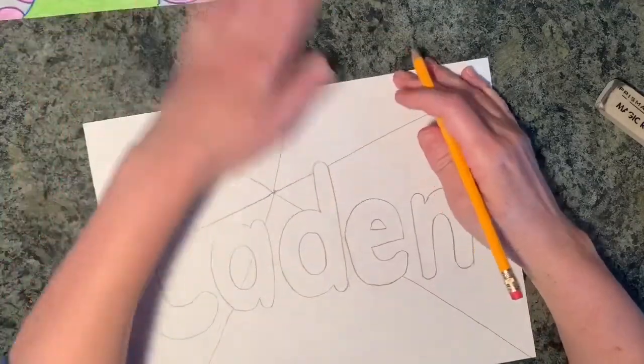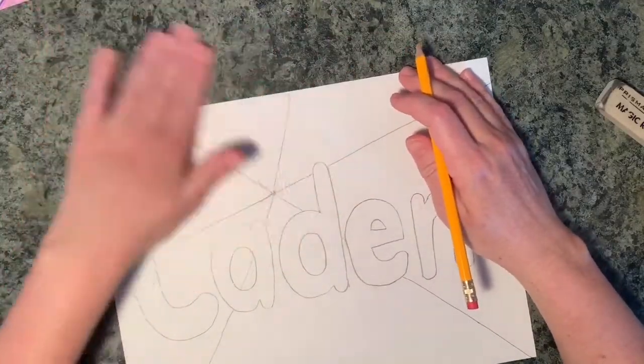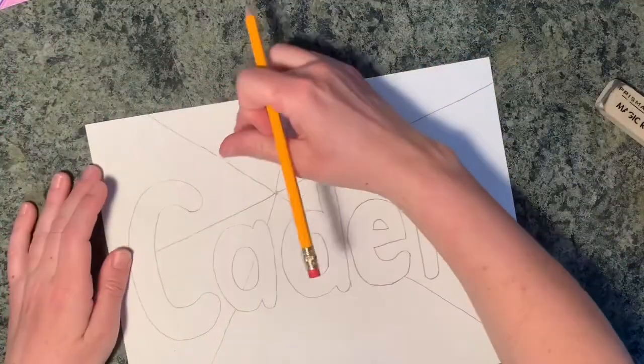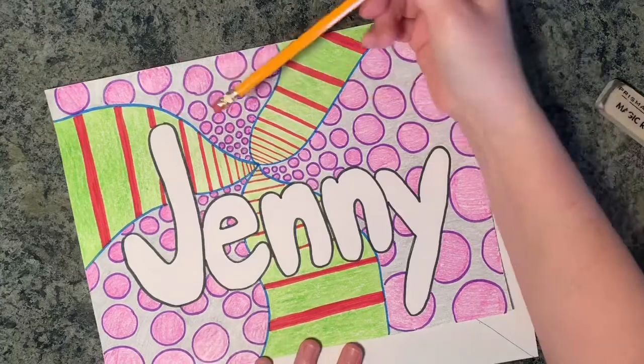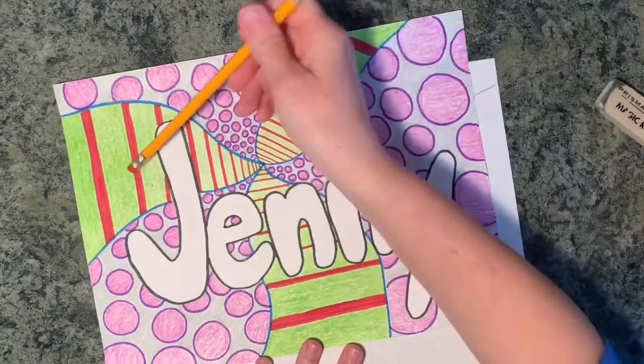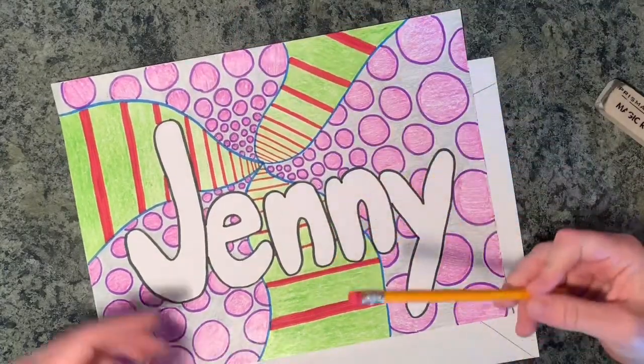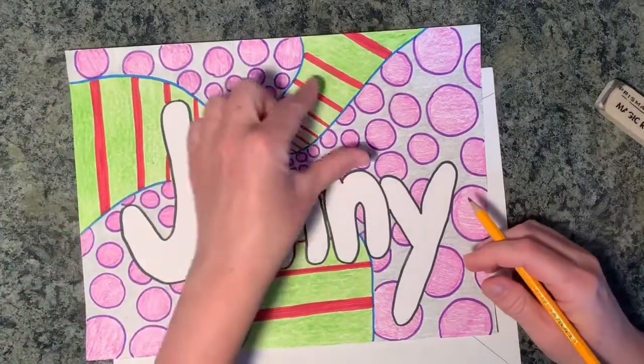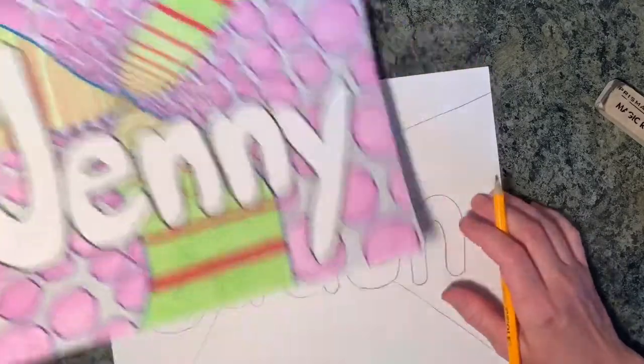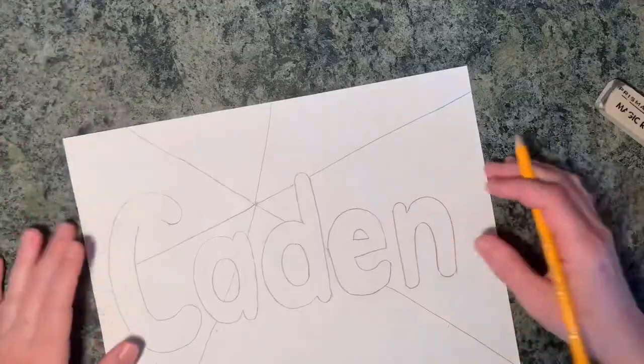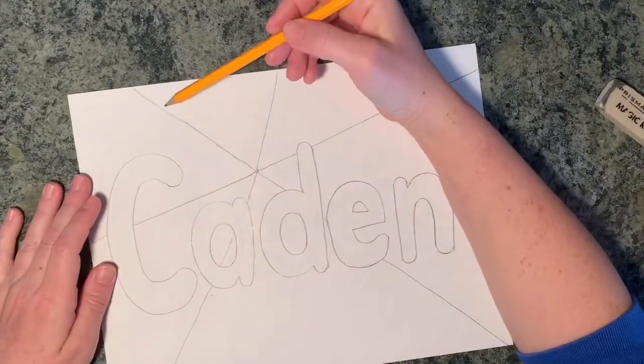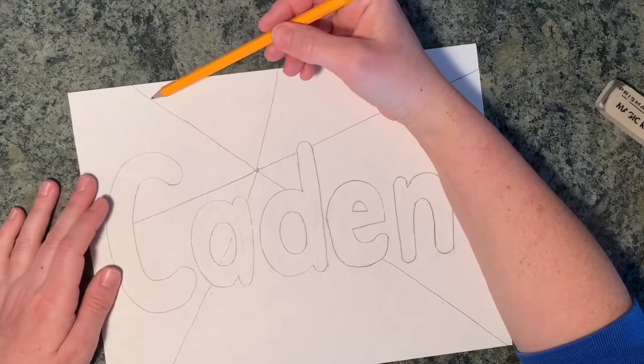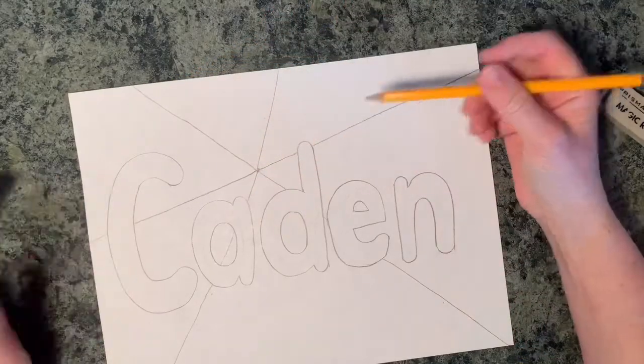Now you want to have an even number of these lines because we're going to do an alternating pattern. So if you take a look here, I've got three of my bubbles and I've got three of my stripes. And if you have an odd number of lines, you're going to end up with two bubbles next to each other or two stripes next to each other. And that's going to look like a mistake. So you want to make sure you have an even number. So two or four or six or eight. If you want to get really fancy, I'm going with six.